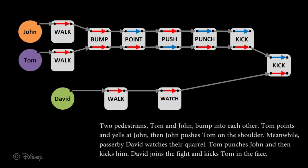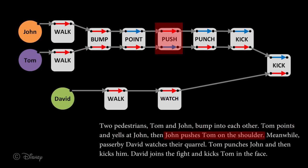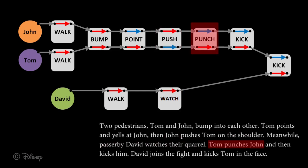Our interface allows the user to create a diagram of the scene description called an event graph, where each node represents an event between actors. A node represents a simple sentence, which includes a verb and one or more subjects, and may also include an object.